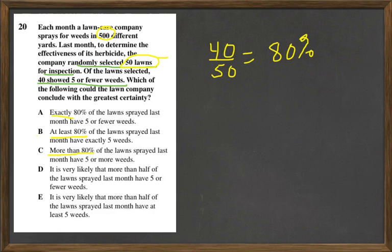That's why we're going to then look at this language of 'it is very likely,' so both D and E have that. So those are our two choices. Now, from the sample...